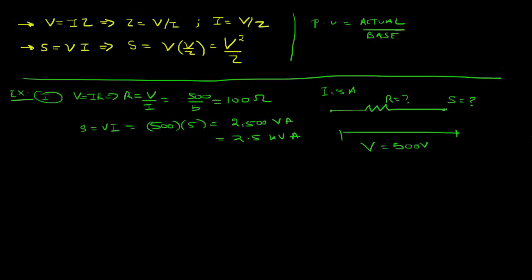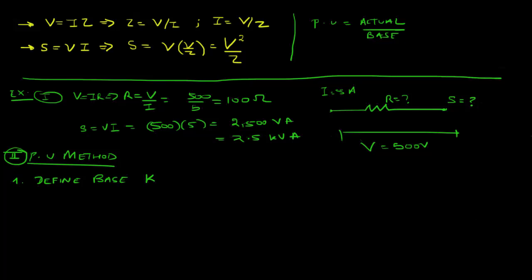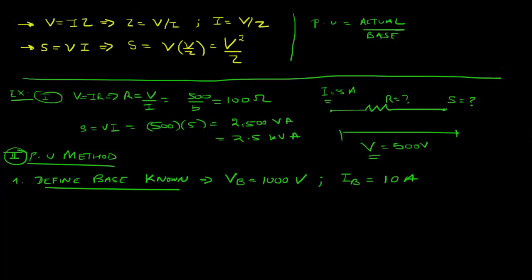Since we're just starting out, let's solve this same circuit using the per unit method. Step one: define base values for the known quantities. We know voltage and current, so I'm going to arbitrarily choose a voltage base of 1000 volts and a current base of 10 amps.